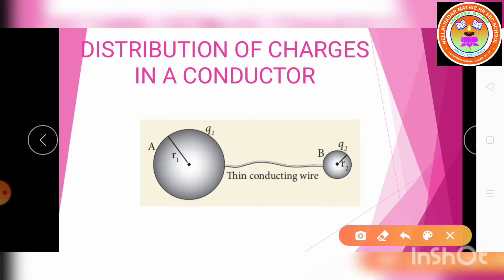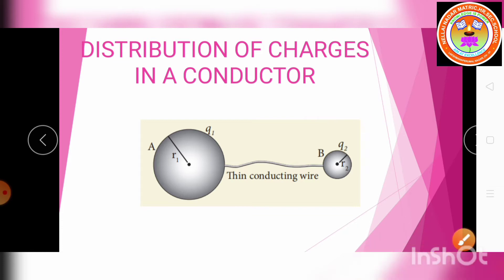The total charge Q is equal to Q1 plus Q2. The charges are distributed only on the surface, and there is no net charge inside the sphere.